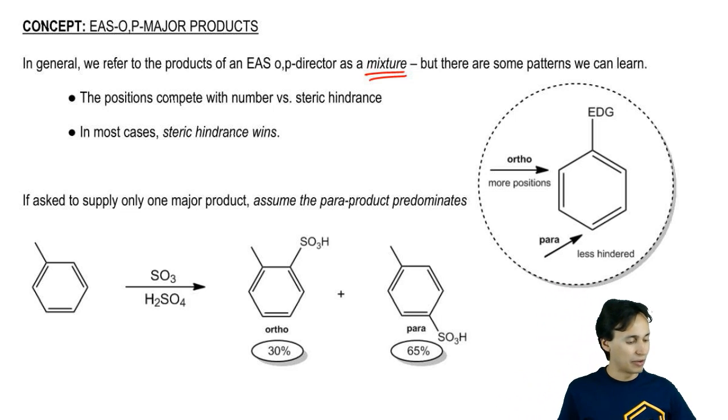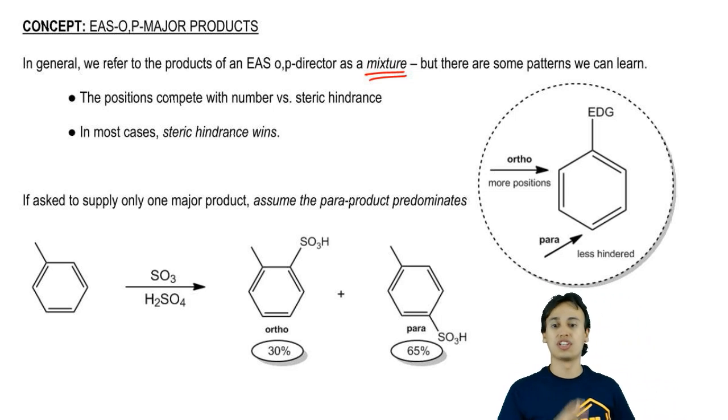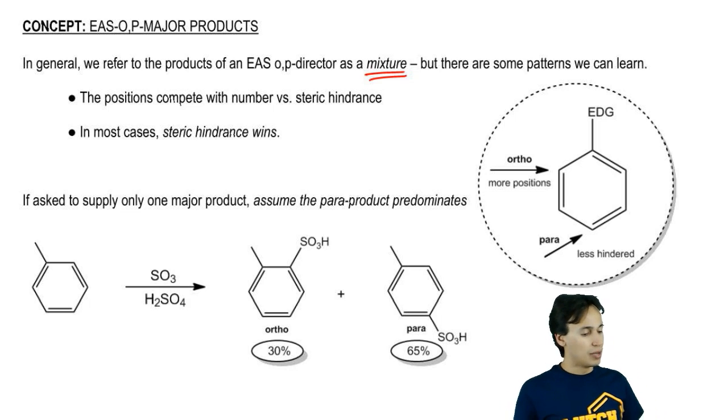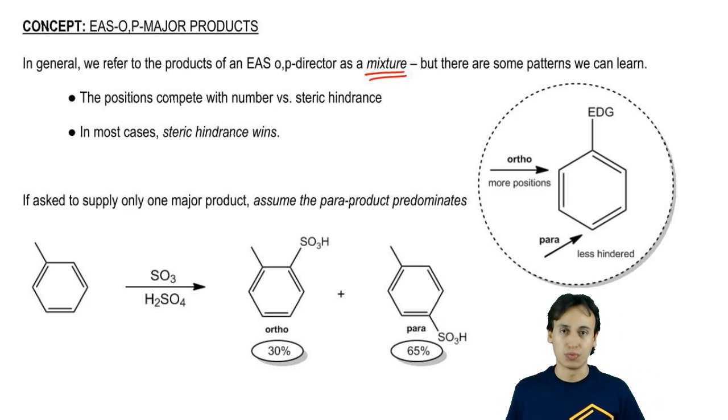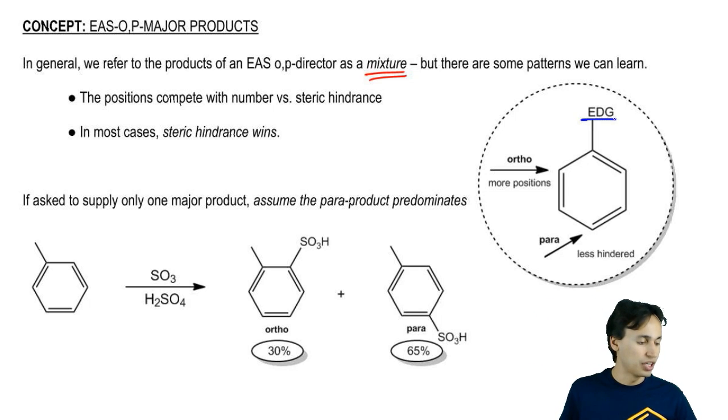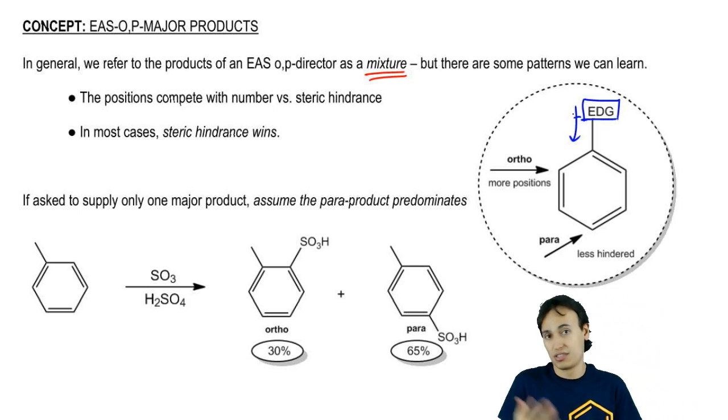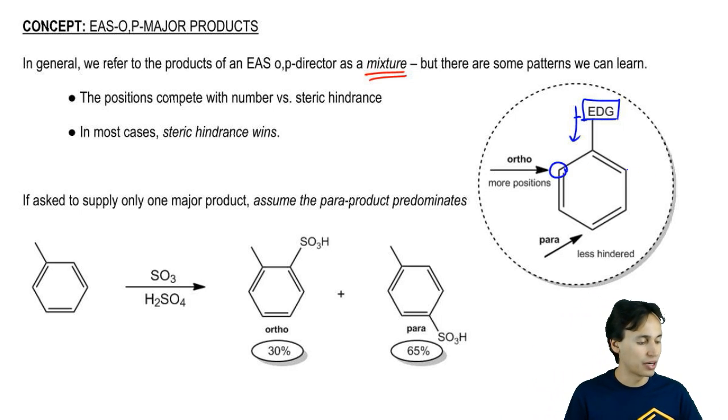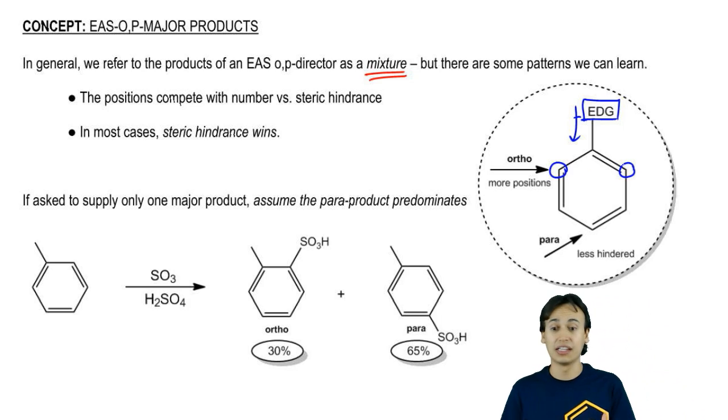Let me tell you about the difference between the ortho position and the para position. Basically these positions are in competition with each other because they both have advantages. Let's say they have an electron donating group. That means it's pushing electrons into the ring and it's probably an ortho-para director. The ortho position has a clear advantage right from the beginning because notice that it has two positions instead of one.